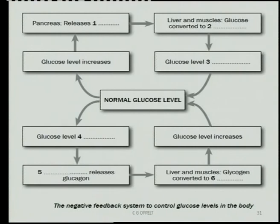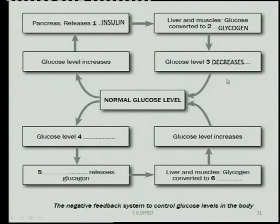Looking at the pancreas diagram: when the glucose level increases, it must be lowered, so insulin is secreted. In the liver and muscles, glucose is converted into glycogen. The glucose level then decreases and becomes normal again.